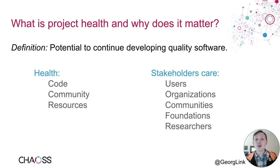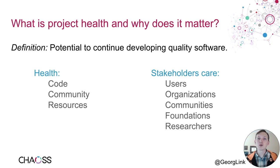Project health is the potential to continue developing quality software. If we look at academic research, there are three areas that academics look at when they look at the health of a project: the source code, the community that is creating and maintaining that source code, and the resources available to them. There are many stakeholders that care to understand project health — users, organizations, communities around these projects, and foundations and researchers.